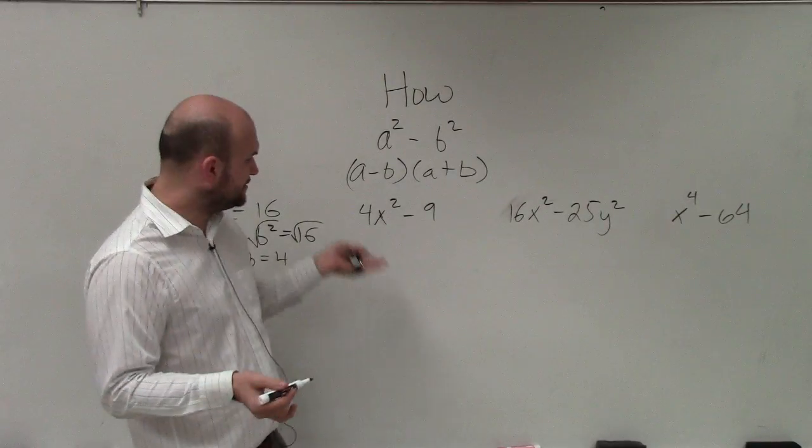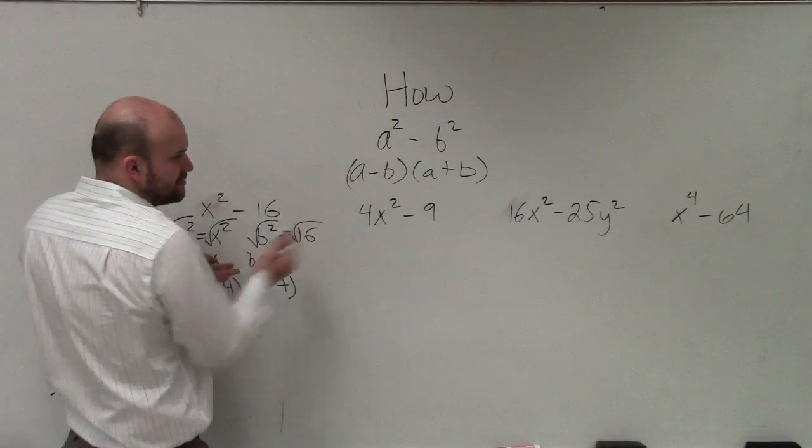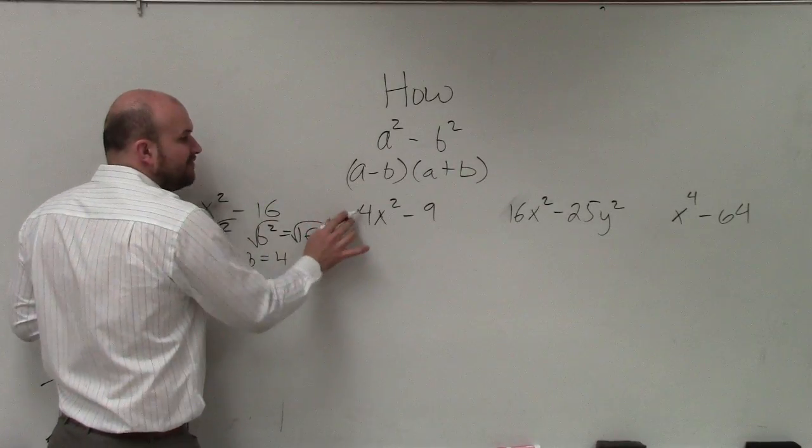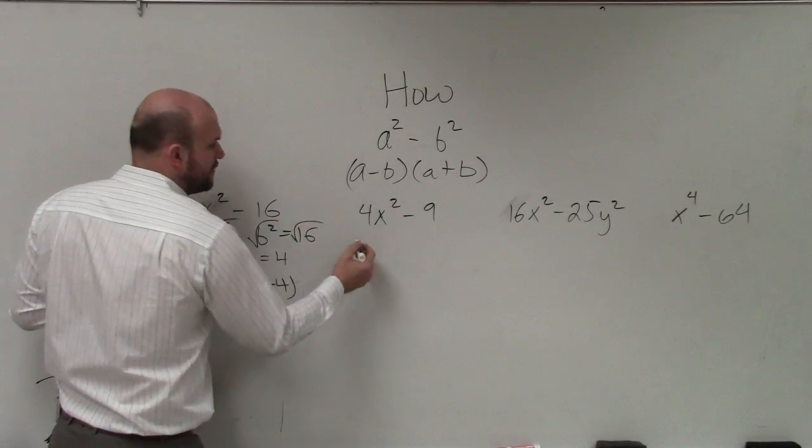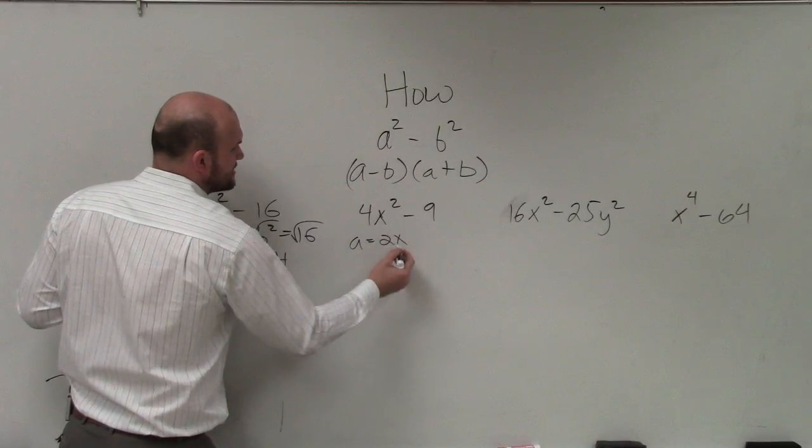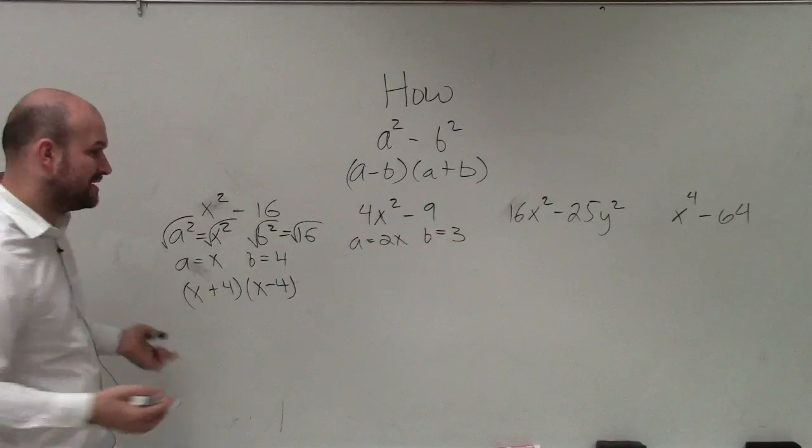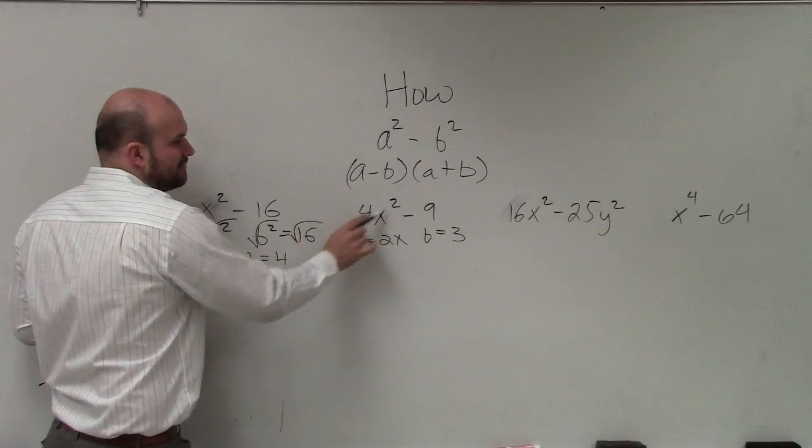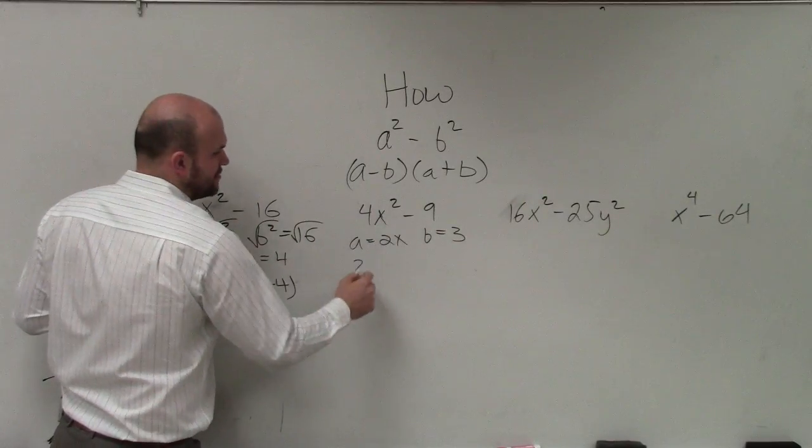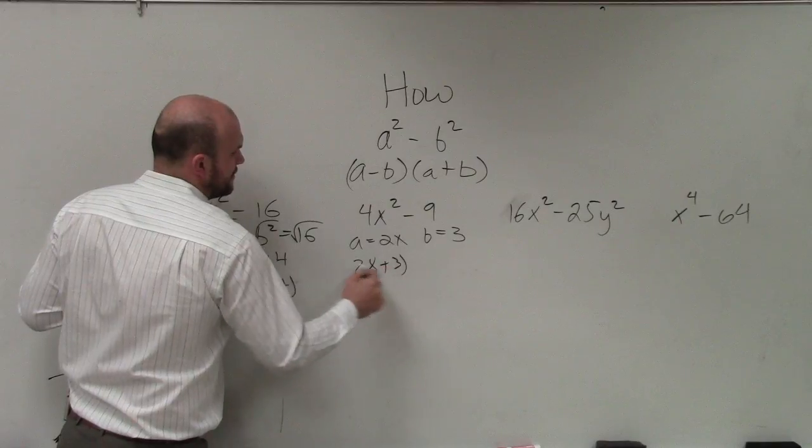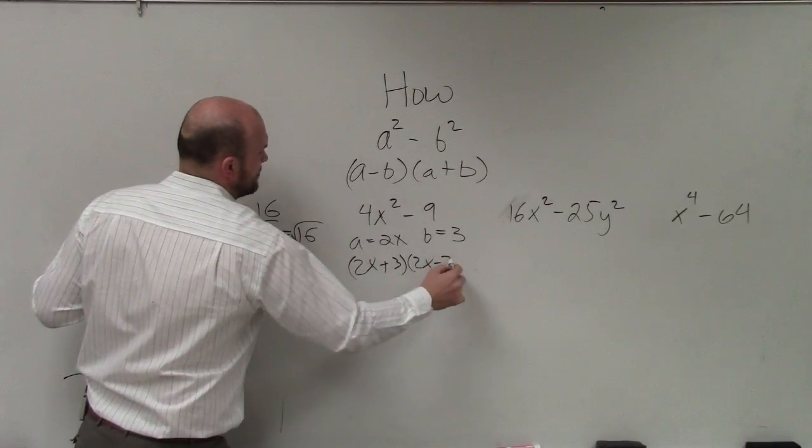Now, in the same case over here, if you took the square root, you're going to take the square root of 4 and x squared. Therefore, we could say that a is going to be 2x, and b will equal 3. OK, I'm not going to go through all the steps again. But if you take the square root of 4x squared, you can say a is just 2x. So this one would be 2x plus 3 times 2x minus 3.